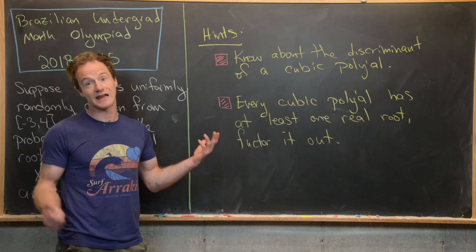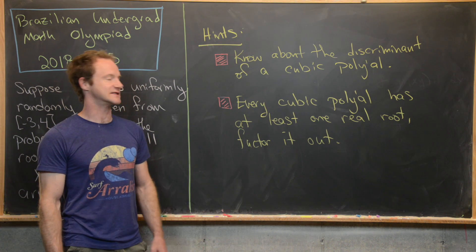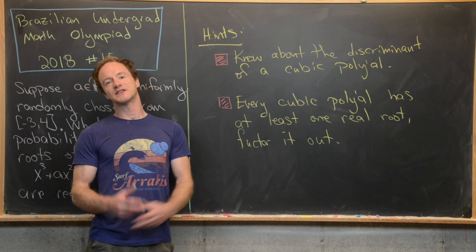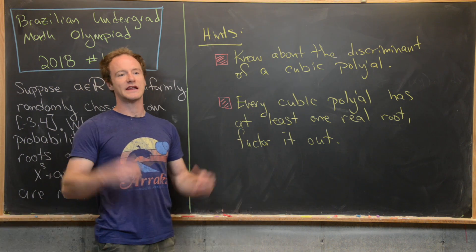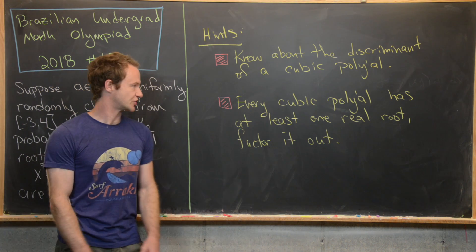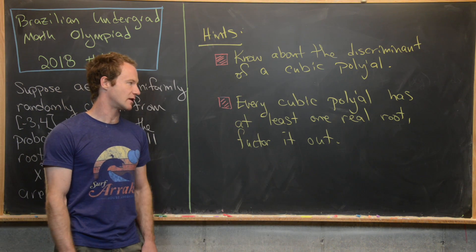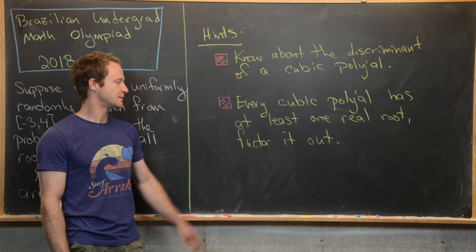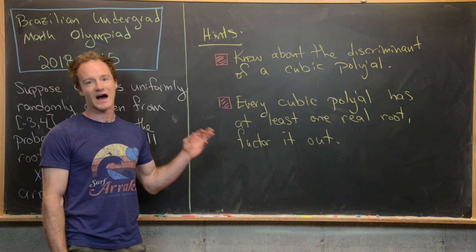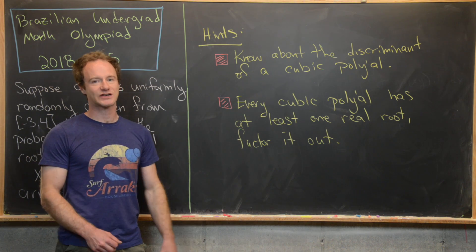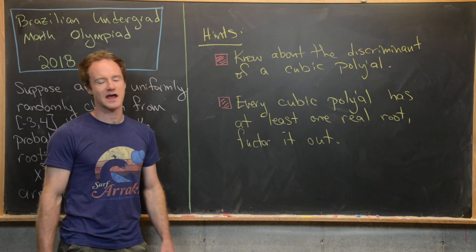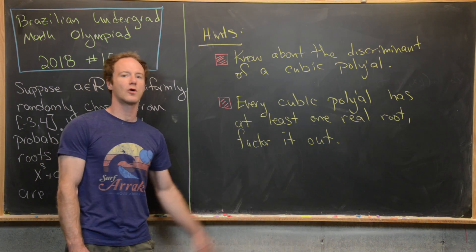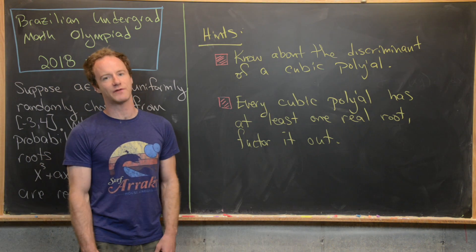I certainly had to look it up, but I knew it existed. The second hint gives a quicker and easier solution: every cubic polynomial has at least one real root — find it and factor it out. That's really all I'll say about this hint because giving more would almost give the problem away.